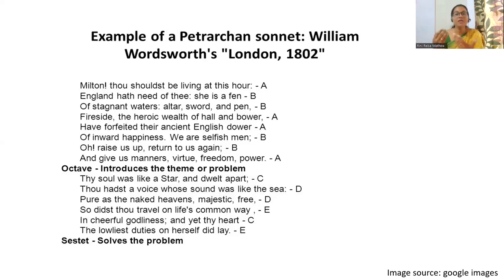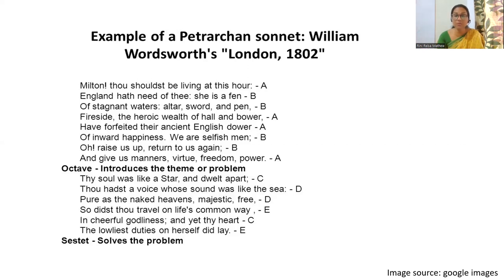To repeat: the Italian or Petrarchan sonnet originated from Italy, practiced and popularized by Italian writer Petrarch. This form was borrowed by Sir Thomas Wyatt and introduced into English literature in the 16th century. Famous practitioners include Wordsworth, Milton, the Rossetti siblings, and Wyatt himself. They follow the stanzaic form of an octave combined with a sestet, making a 14-line poem, and the themes are usually courtly love.